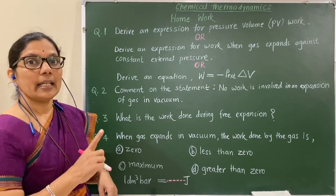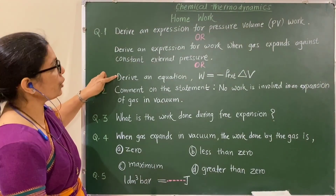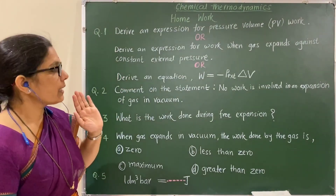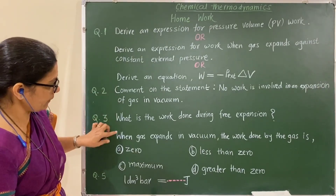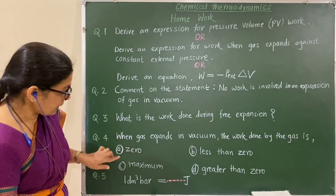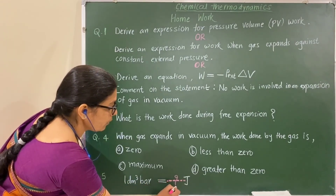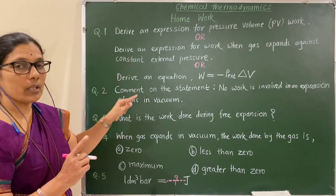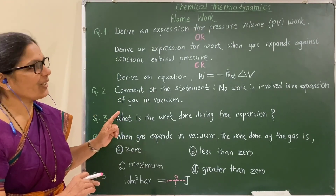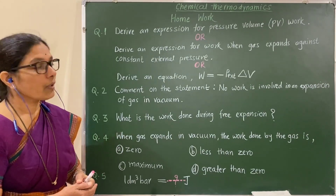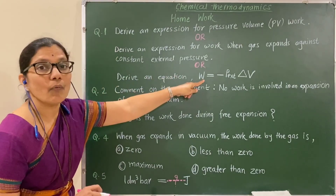In this session, you studied the expression for PV type work. Questions based on this part may be asked in different ways but the answer remains the same. Then, free expansion — questions, MCQs, and short answers may be asked on that. Lastly, units of work: one dm³·bar equals how many Joules — fill in the blanks. The answers to all these questions are in this session. In the next session, we will solve numericals based on this formula.